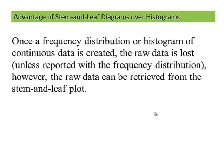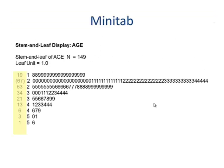Once a frequency distribution or a histogram of continuous data is created, raw data is lost, unless it's reported with the frequency distribution. However, raw data can be retrieved from a stem and leaf plot.